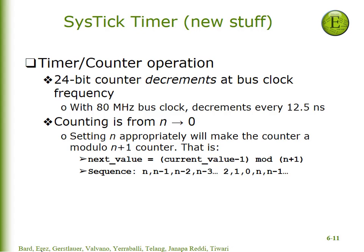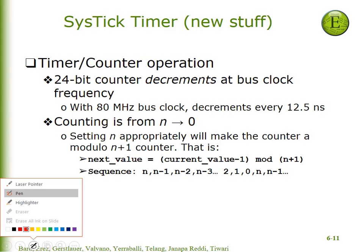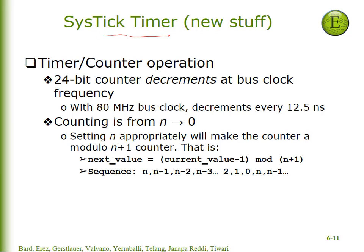Hi. Let's give you a brief introduction on how to use the SysTick timer. We're going to use it to measure elapsed time. Basically what it is is a counter — it counts. It happens to be a down counter and it happens to be 24 bits wide. This counter, which has the name 'current', is a 24-bit number which will count down on the bus cycle. In this lab it will count down every 12.5 nanoseconds.